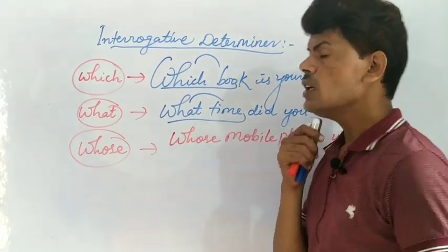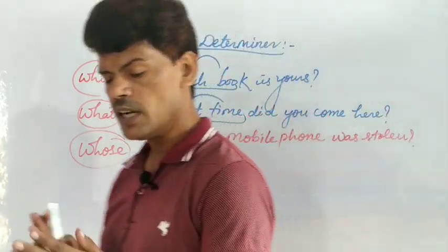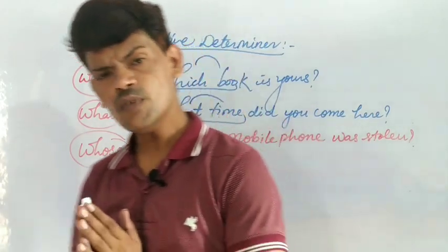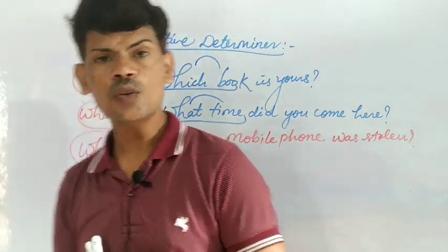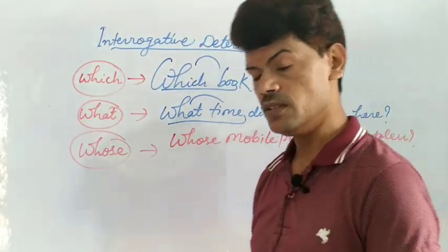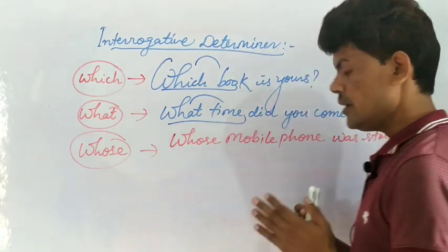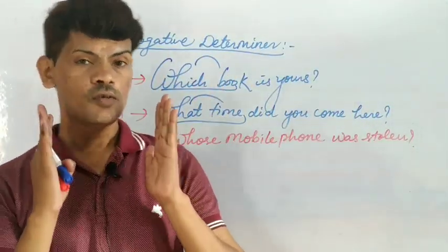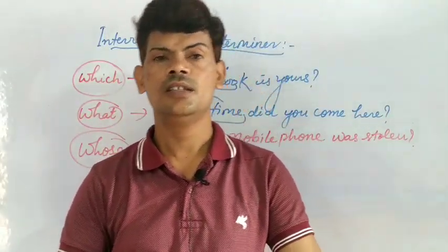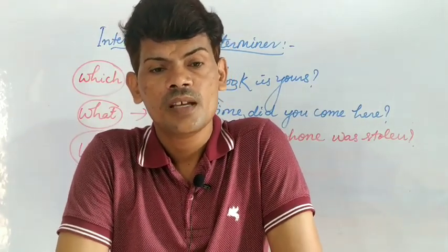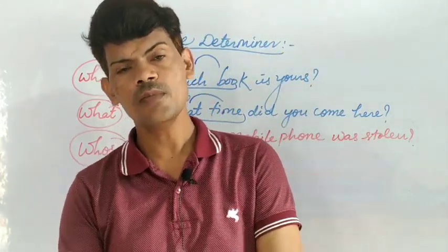Okay students, this is your last determiner. We have discussed about determiners: article determiner — definite and indefinite; demonstrative determiner; possessive determiner; numeral determiner — definite or indefinite; distributive determiner; quantitative determiner; and last, interrogative determiner. In my next video, I will come with a new topic. Thank you very much and be happy.